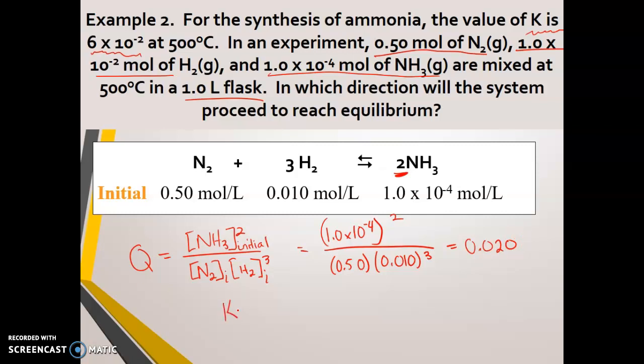So now I'm going to take a look at K. K is 6 times 10 to the negative second. And Q we found to be 0.02. So this is 0.06, and this is 2.0 times 10 to the negative second. So just kind of looking at that helps me to see it a little bit more clearly. So K is bigger than Q. So K is greater than Q. So this means that my reaction is going to shift to the right or the forward direction.